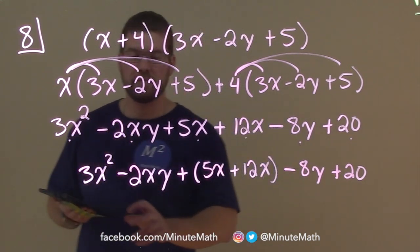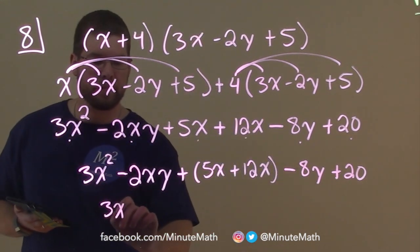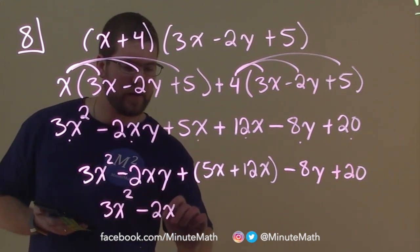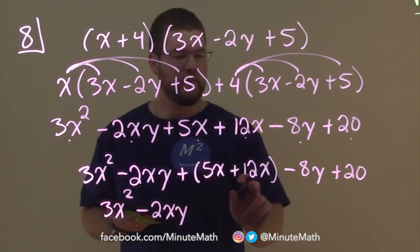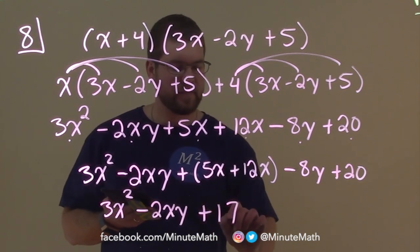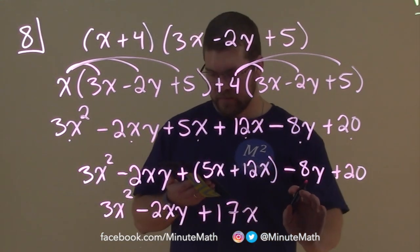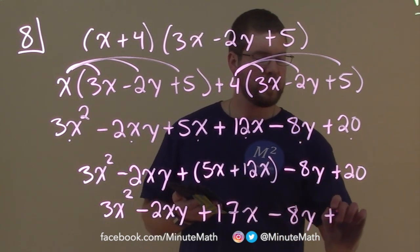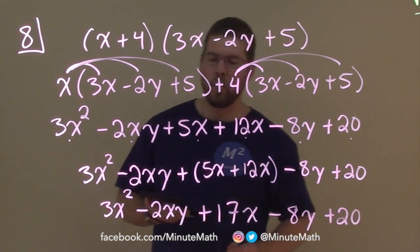Now let's just combine the like terms. I got nothing with 3x squared, or simplify, right? Minus 2xy, got that all done. 5x plus 12x is a 17x. Then we just have the 8y, bring that down, and a 20. And now we're all finished.